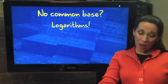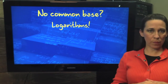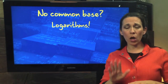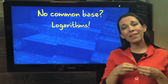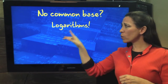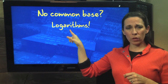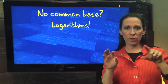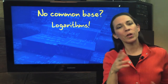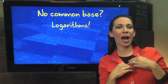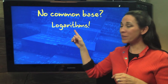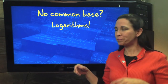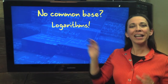Now, the problem comes when there is no common base — then we have to use logarithms. Remember, logarithms and exponentials are inverses of each other. When we're solving logarithms, we're able to use the definition — the swirly-doo that we talked about in the previous video. If you didn't watch the logarithm video, then the swirly-doo means absolutely nothing to you. But it's the definition of the logarithm.